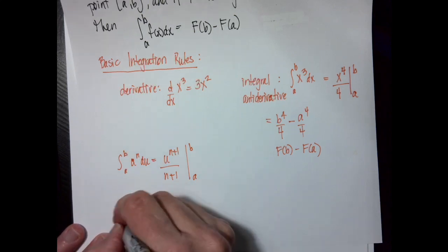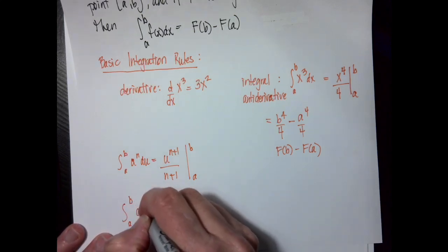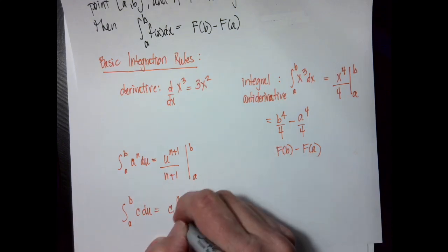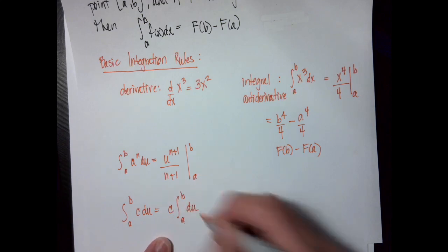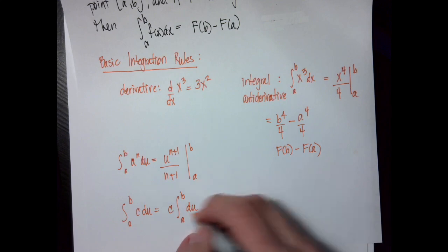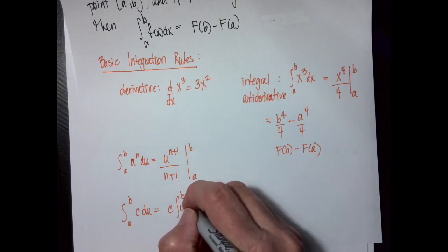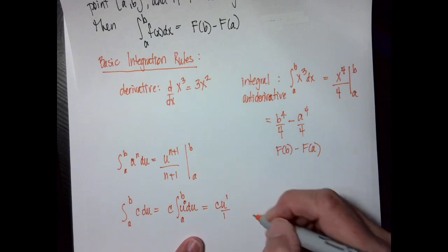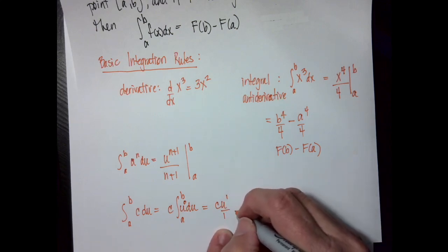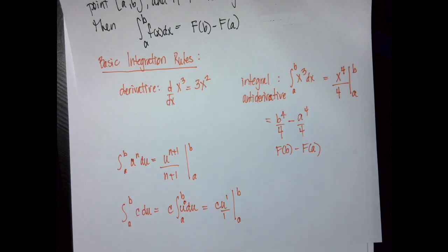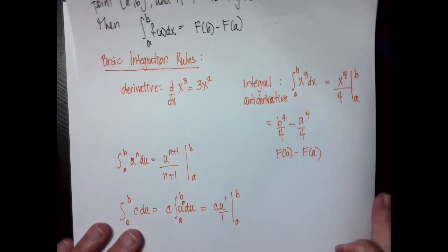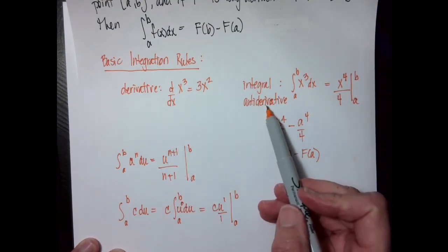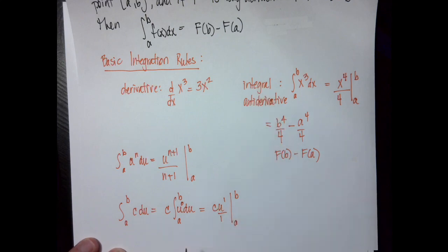If I have the integral from a to b of a constant, the constant stays — our properties say I can pull it out front — and I'm just going to have du. The degree right now is zero, so when I integrate it goes up 1, I divide by the new power, and evaluate from a to b. The key thing to remember: a derivative goes down in power; an antiderivative or integral goes up in power.